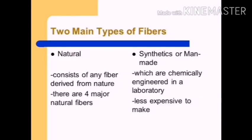As we have learnt in previous classes, there are two main types of fibres. First, natural fibres. Second, synthetic or man-made fibres. Natural fibres consist of any fibre which is derived from nature. Synthetic or man-made fibres are chemically engineered in a laboratory. They are less expensive to make, so generally people use synthetic fibres over natural fibres.